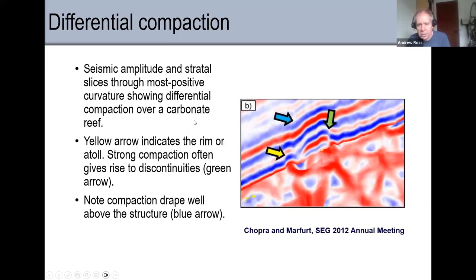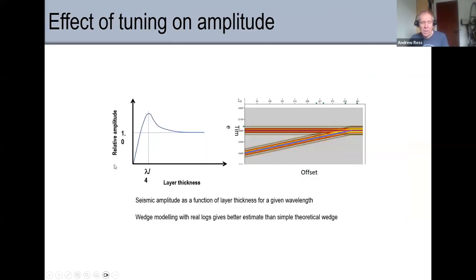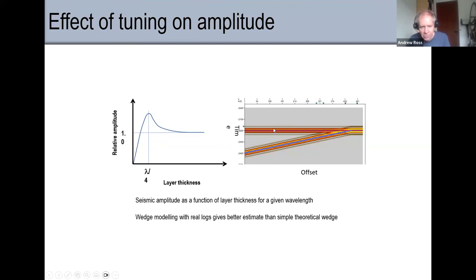One thing to worry about with amplitudes: looking at reflection strength, if I've got a big contrast — a fluid change or a porosity change — I'm going to get a high reflection strength. But I also have to worry about amplitude changes related to layer thickness — that's tuning. Something quite important: very often the things you're interested in are right at the tuning thickness. It's going to vary for different frequencies, and we can use that.